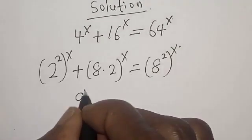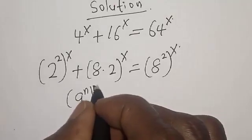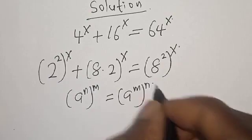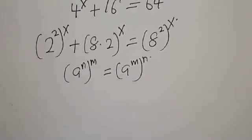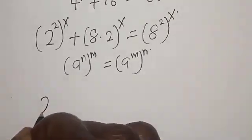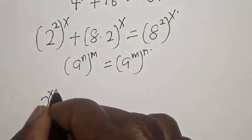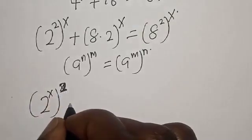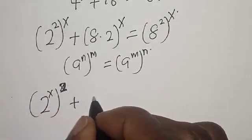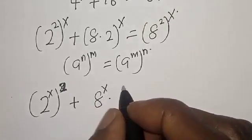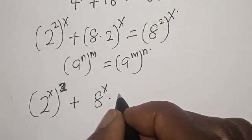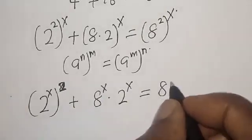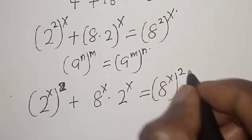Note that a raised to power n, raised to power m, is equal to a raised to power m raised to power n. Now 2 raised to power s all squared, plus 8 raised to power x, is equal to 8 raised to power s squared.